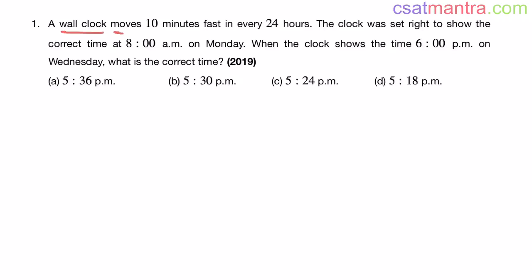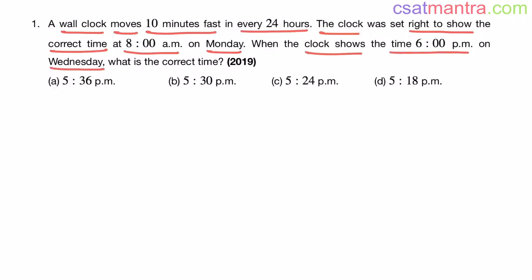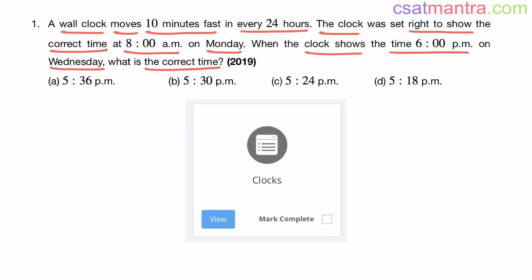A wall clock moves 10 minutes fast in every 24 hours. The clock was set right to show the corrected time at 8am on Monday. When the clock shows the time 6pm on Wednesday, what is the corrected time? This question is based on clocks, asked in 2019.